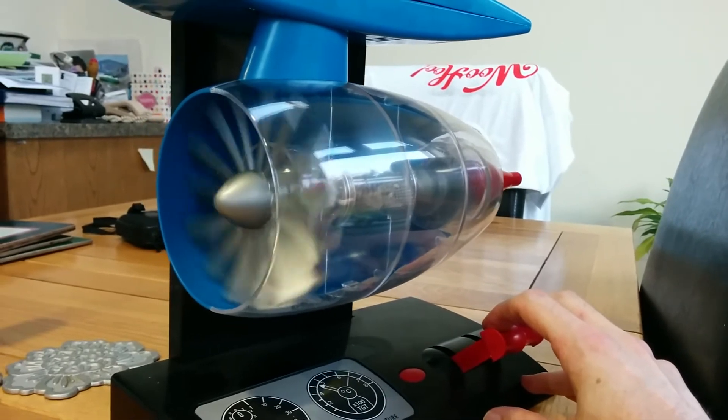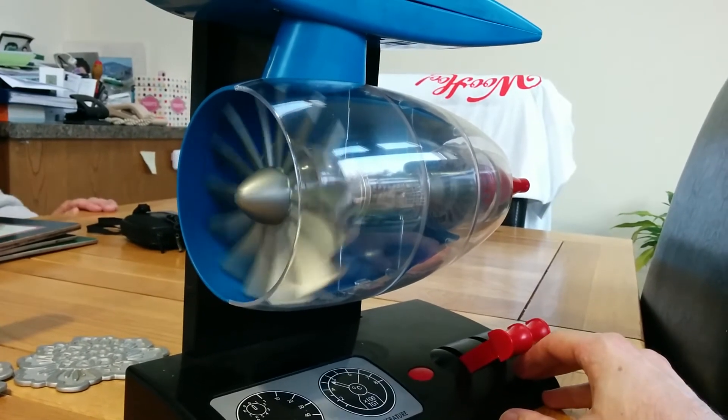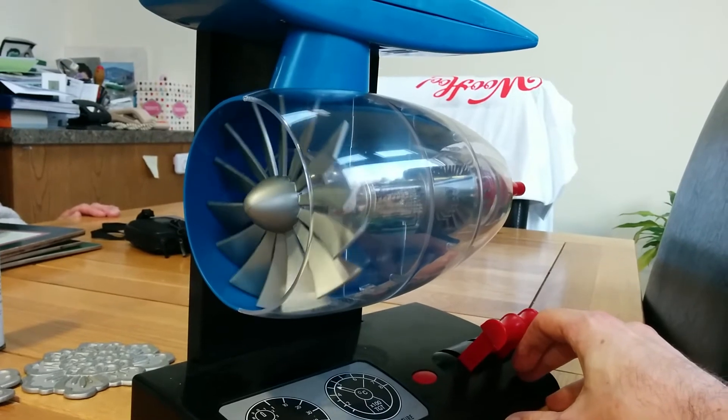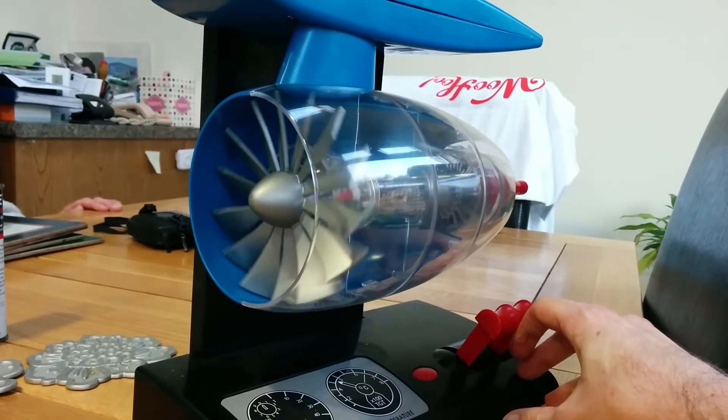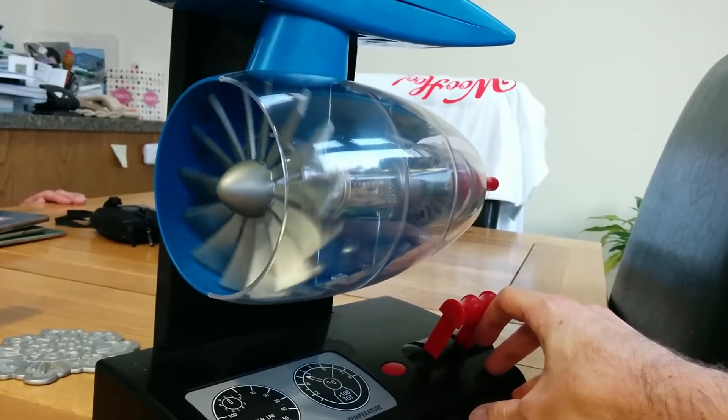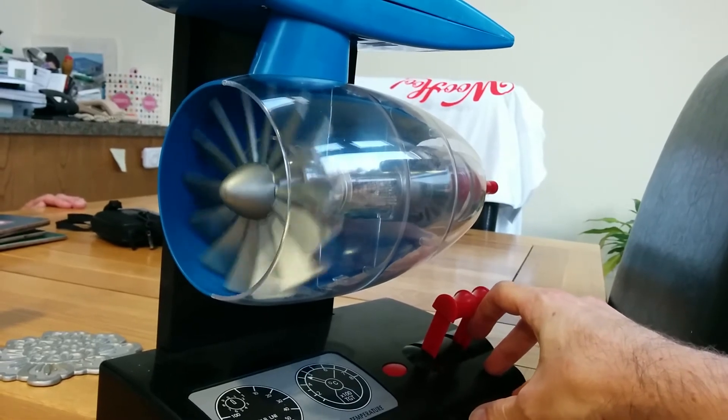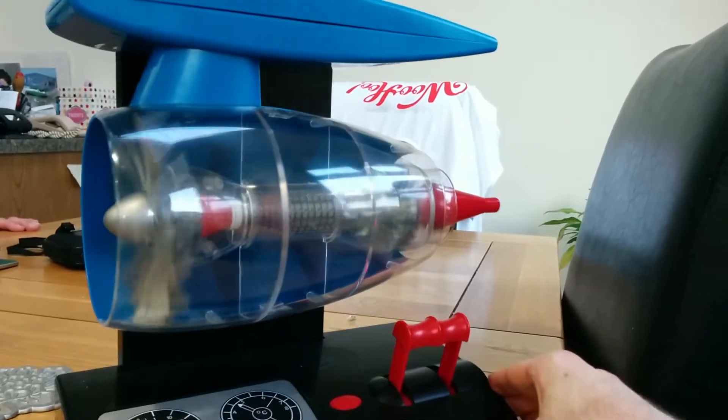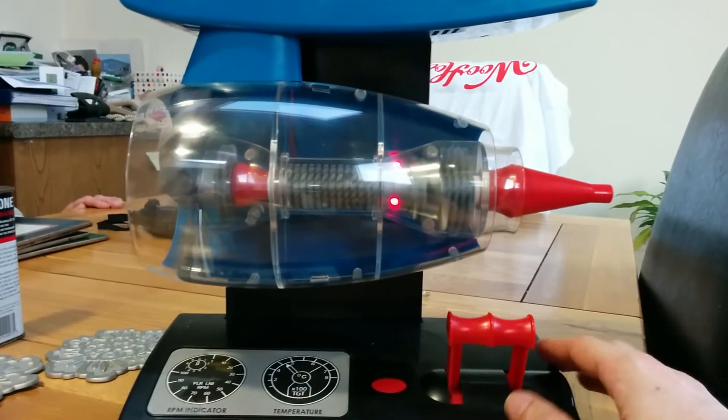You can see it coming down. Blades slowing down. Drop the power back up. Is the red light on the combustion chamber? Let's have a look. Red light on combustion chamber, combustion's on.